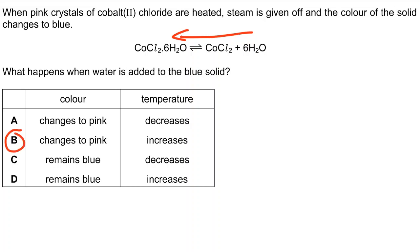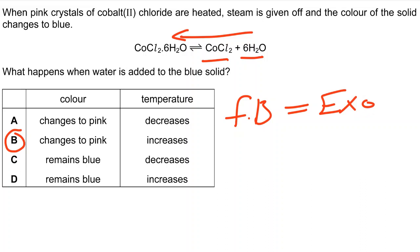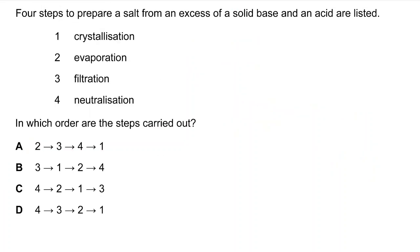Most candidates chose A, but the correct answer is B — it changes to pink. Here you can see the H₂O is bonded with cobalt chloride, and formation of a bond means exothermic, so the temperature will increase. The correct answer is B.